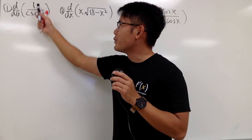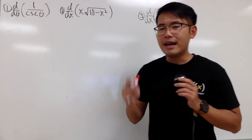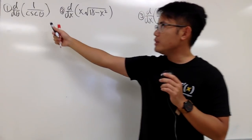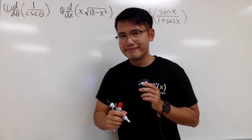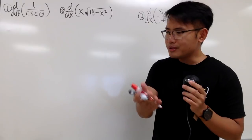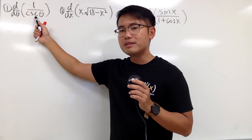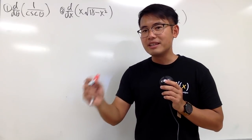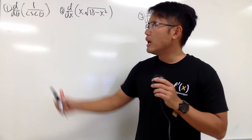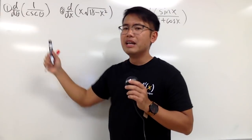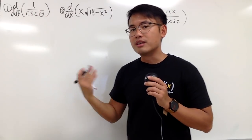All right, we are going to differentiate 1 over cosecant theta. And in this case, do we need to use the quotient rule? Yes, if you use it, it's still okay, but we don't need to, okay? Because we notice, what is cosecant? Cosecant is 1 over sine. And when you have 1 over cosecant, this is in fact just the regular sine function.